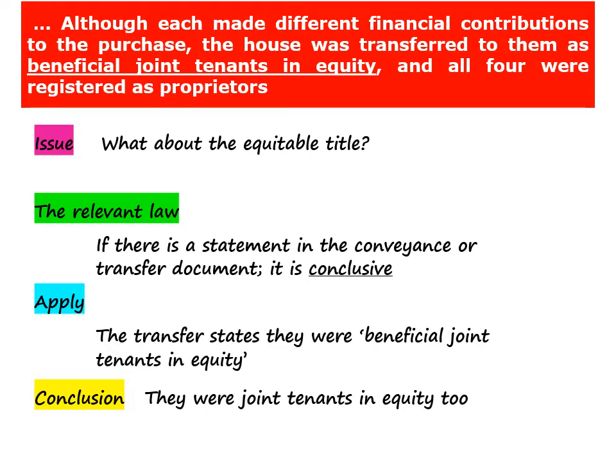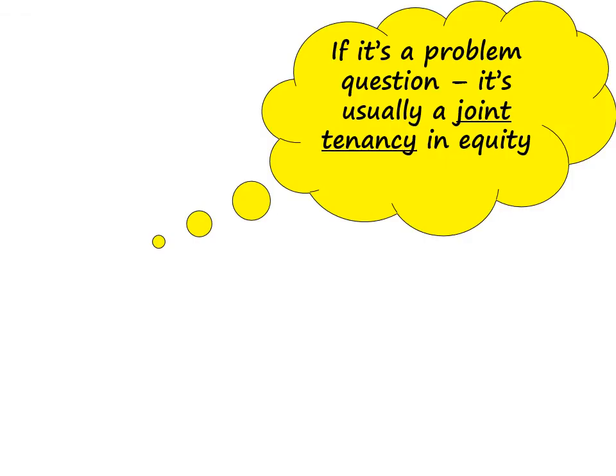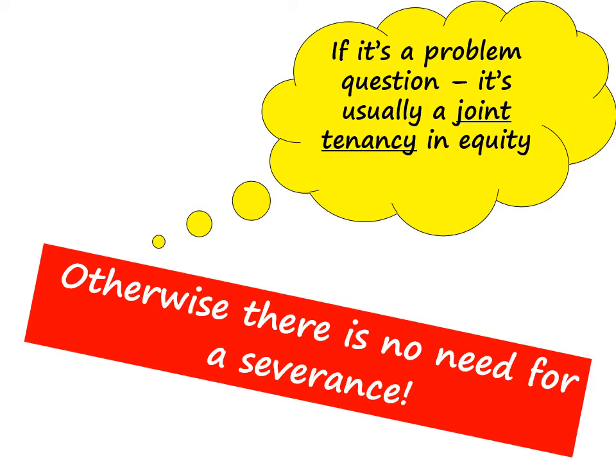Here's a tip. If you're faced with a problem question on co-ownership, it's very common for examiners to want to test your understanding of how ownership can change through the process of severance of a joint tenancy. Severance is only ever relevant where there is a joint tenancy — it doesn't apply to a tenancy in common. So questions which require you to look at possible severances will usually involve an initial joint tenancy in equity. If you believe that the question involves a tenancy in common, just go back and check your reasoning carefully to make sure that is the correct decision.